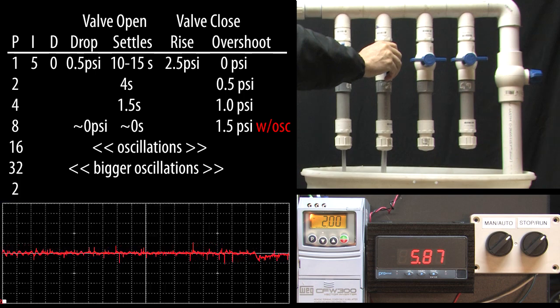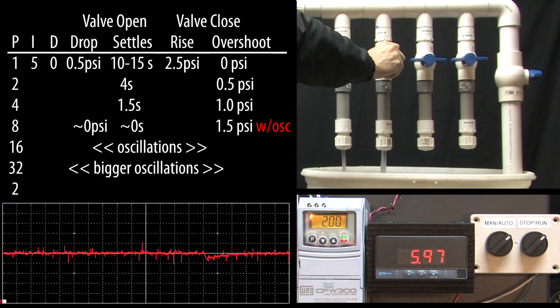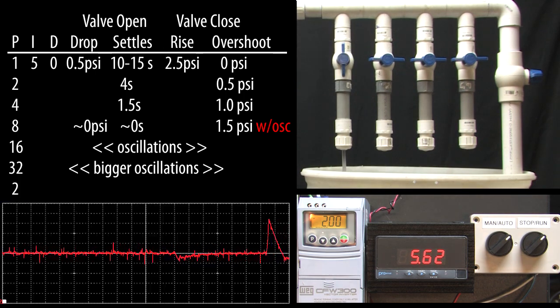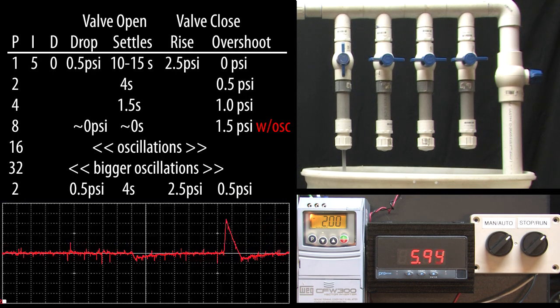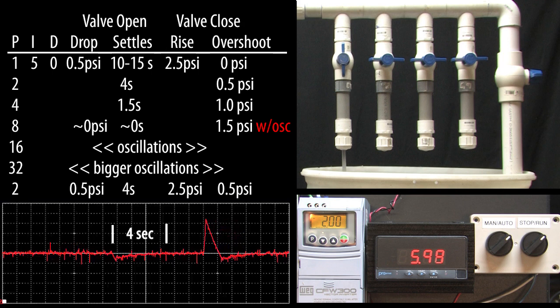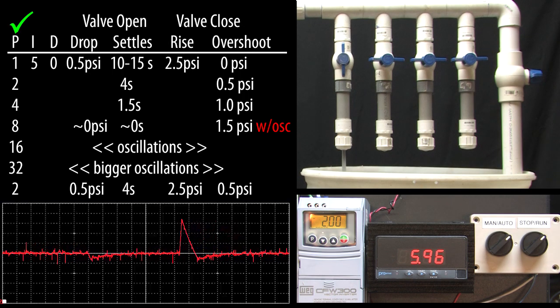I'll open and close the valve and sure enough we're back to our super stable, reasonable response. I kind of like this because it's faster than the 10 to 15 seconds we were seeing with the default PID values and the overshoot here isn't any worse than the pressure drop here. That's a pretty good compromise. OK, that gives us a good feel for how P affects things.